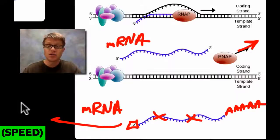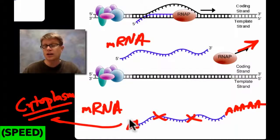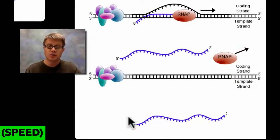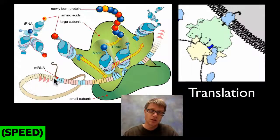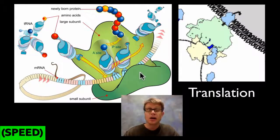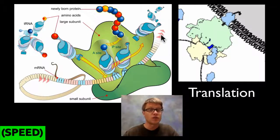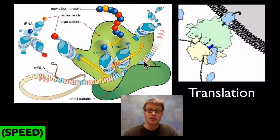The messenger RNA goes outside of the nucleus into the cytoplasm, where we take that message and make a protein out of it, built out of amino acids. The messenger RNA moves through a ribosome, which is where we make proteins. The ribosome has two parts: a small subunit on the bottom and a large subunit on top, and the messenger RNA flows right through it. Every three letters in the messenger RNA codes for one amino acid.